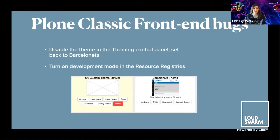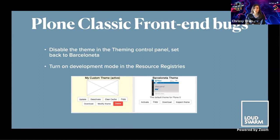If you are using Plone Classic — like if you have Barceloneta and a Diazo theme installed — I recommend disabling the theme. Maybe you're not sure where the bug is coming from, it could be something in your theme. Go to the theming control panel found in Site Setup, switch the theme back to Barceloneta by clicking the activate button, and see if you can still reproduce the problem. Also in Site Setup is the resource registry control panel where you can turn on development mode. This turns off the minification and combining of all the JavaScript files, which can be helpful if you know there's a JavaScript error but can't tell which file it's in.